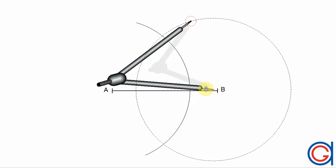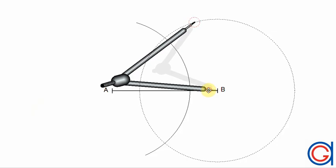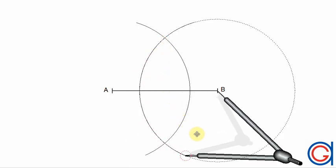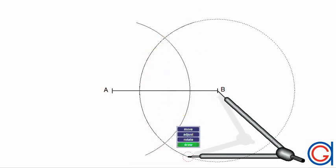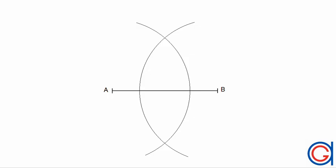To continue with the same radius and our compass centered on point B, we scribe a second arc to intersect our previously drawn arc above and below the segment AB as shown in the video.